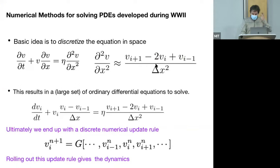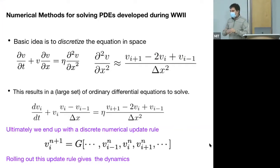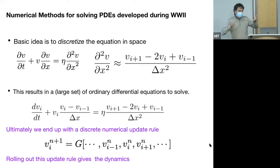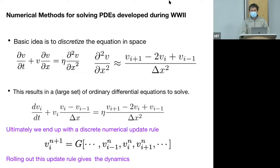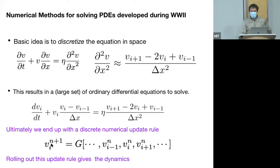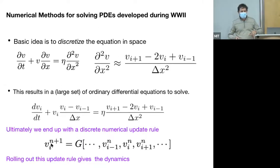The way we solve PDEs on a computer is to discretize them—writing down finite difference approximations to derivatives, or whatever method you prefer—reducing the PDE to a set of ODEs. At the end of the day we have a discrete update rule that specifies the field at the n+1 time step in terms of previous time steps, and rolling that out gives the dynamics.